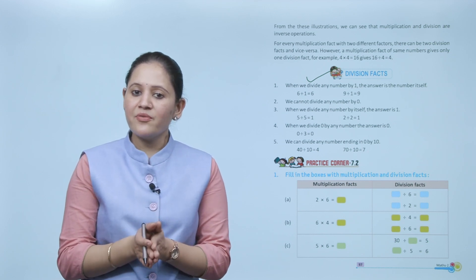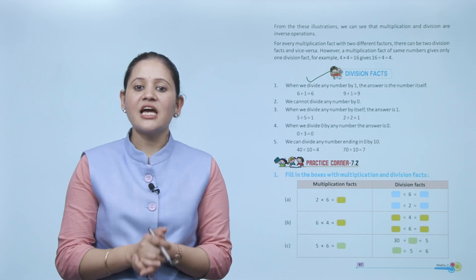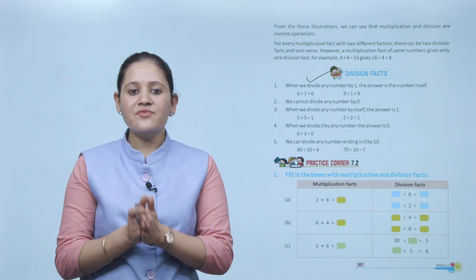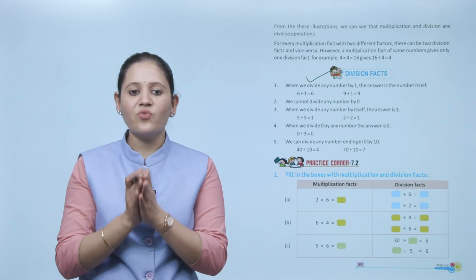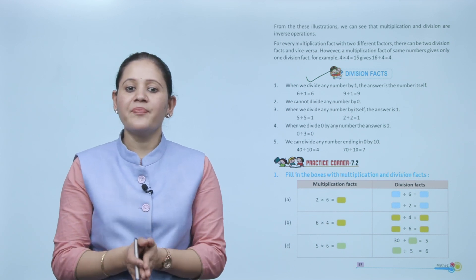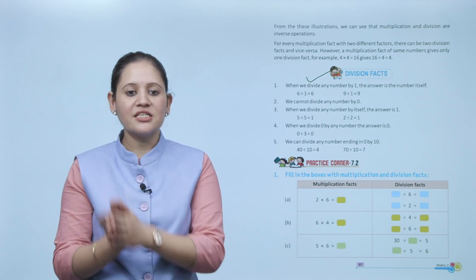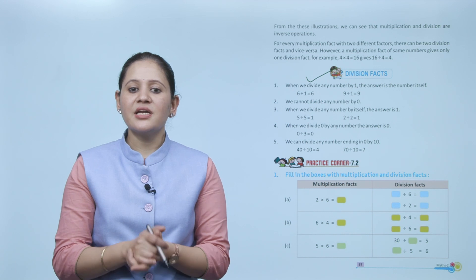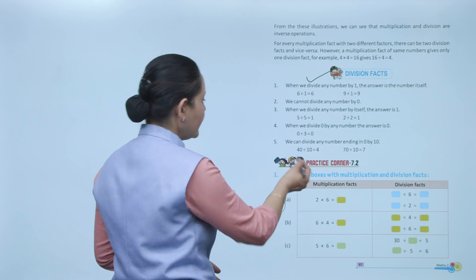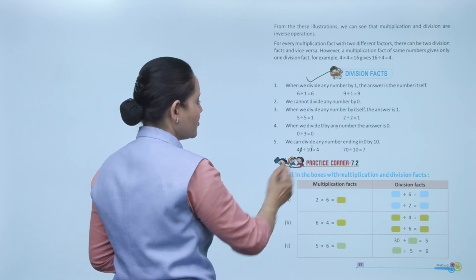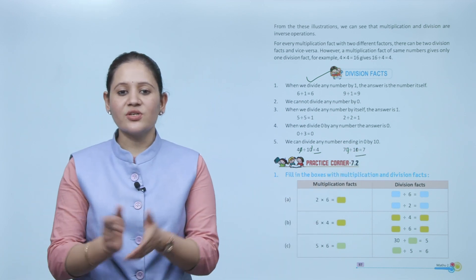Division facts: when we divide any number by 1, the answer is the number itself — 6 ÷ 1 = 6. We cannot divide any number by 0. When we divide any number by itself, the answer is 1 — 5 ÷ 5 = 1. When we divide 0 by any number, the answer is 0. We can divide any number ending in 0 by 10 by removing the zero — 40 ÷ 10 = 4, 70 ÷ 10 = 7.